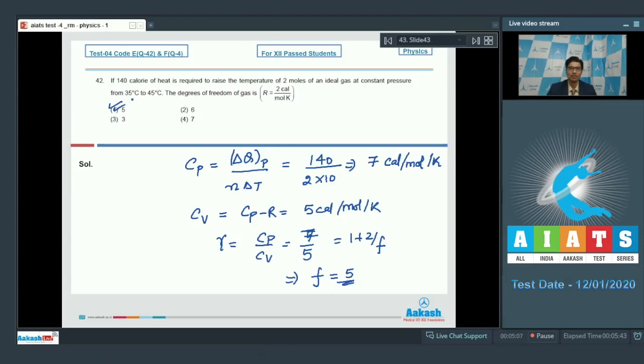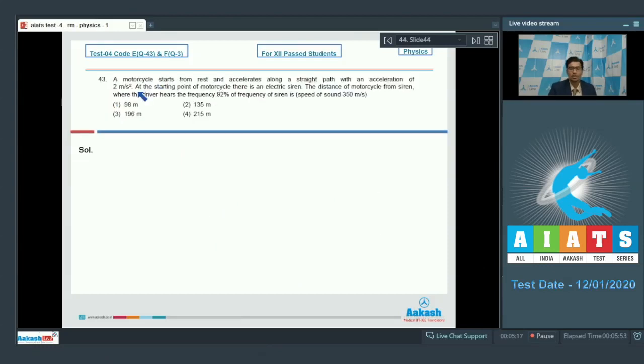Now, let us solve question number 43. The question says a motorcycle starts from rest and accelerates along a straight path with an acceleration of 2 meters per second square. At the starting point of motorcycle, there is an electric siren. The distance of motorcycle from siren where the driver hears the frequency of 92 percent of the frequency of siren is.